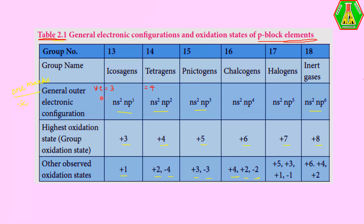The third group from P-block is group 15, called the pnictogens. The valence electron count is 5, so the general outermost electronic configuration is ns²np³. This group is basically stable because the P orbital has a half-filled configuration. The group oxidation state is +5, and other observed oxidation states are +3 and −3 also.